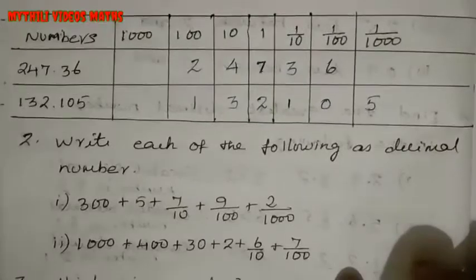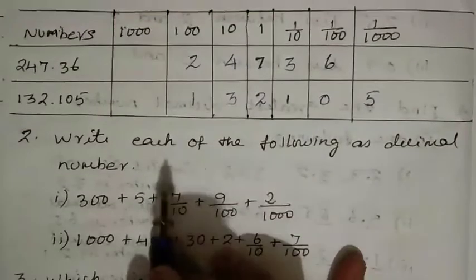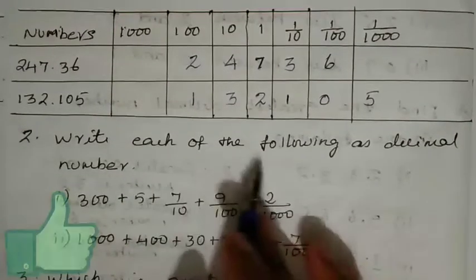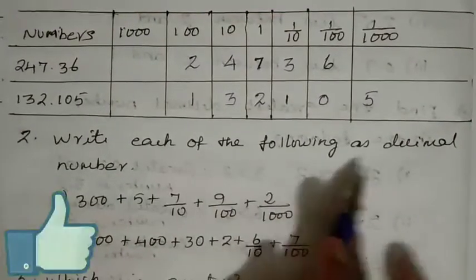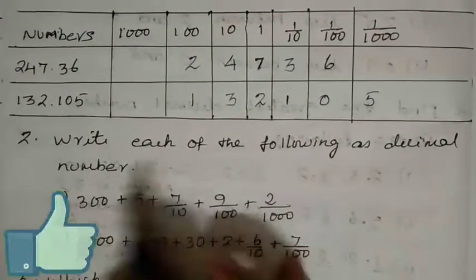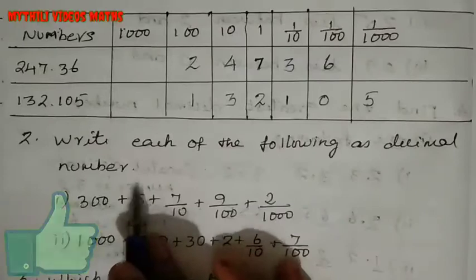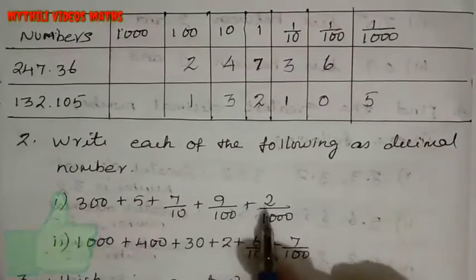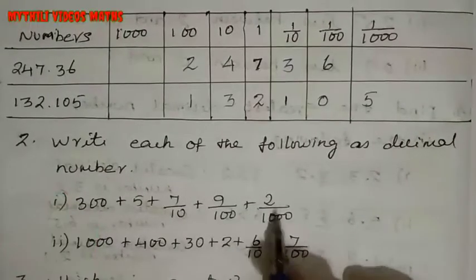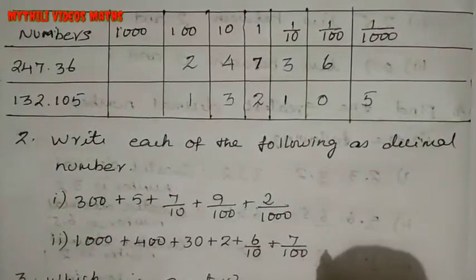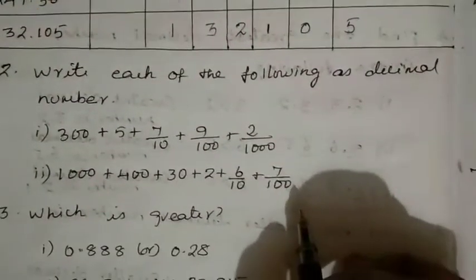And then we'll see the second sum: Write each of the following as decimal numbers. So, given certain numbers, we need to write them as decimal numbers. Okay, let's begin.